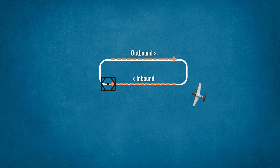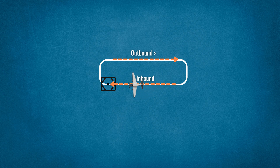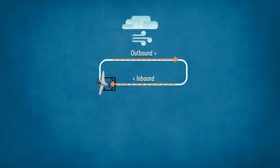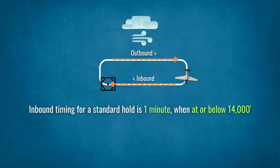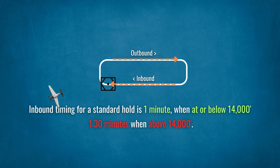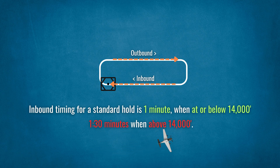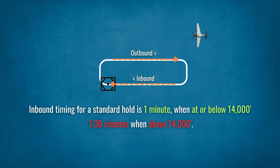The inbound leg is flown following the assigned radial or bearing to the fix, whilst the ground track for the outbound leg is adjusted for the wind conditions to facilitate the turn to intercept the inbound track. The outbound leg is flown for the appropriate time interval to achieve the regulated inbound timing. Inbound timing for a standard hold is one minute when at or below 14,000 feet, and one and a half minutes when above 14,000 feet. When the pilot receives ATC clearance specifying the time of departure from the holding fix, adjustments should be made to the flight pattern within the limits of the established holding pattern to leave the fix as close as possible to the time specified.